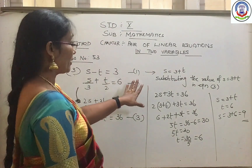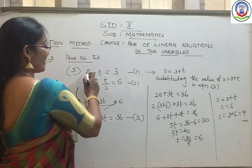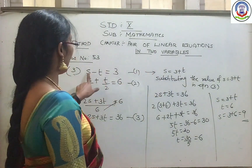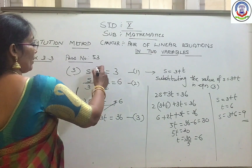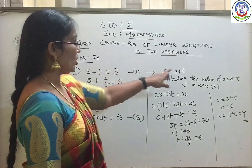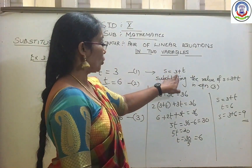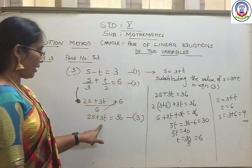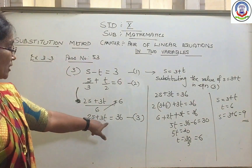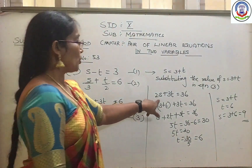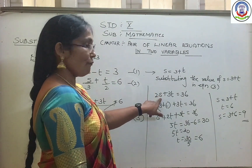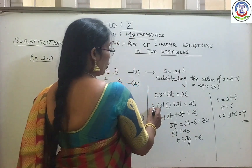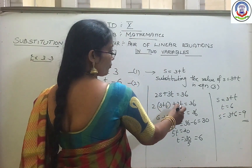Now apply the substitution method. From the first equation, s and t are the variables — take one in terms of the other. From s minus t equal to 3, we get s equal to 3 plus t, because moving t to the other side changes minus t to plus t. Now substitute s equal to 3 plus t into equation 3 (which is 2s plus 3t equal to 36), replacing s with 3 plus t.